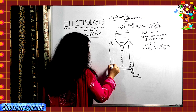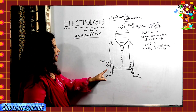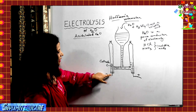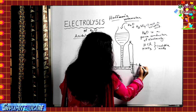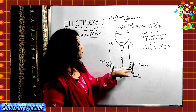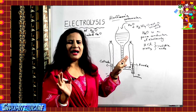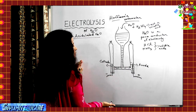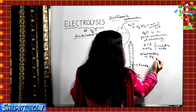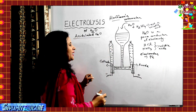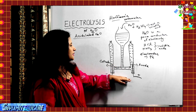This is the negative electrode - the cathode - connected to the negative terminal of the battery. The other electrode connected to the positive terminal of the battery is the anode. The electrodes are made of platinum because platinum is not very reactive and won't react with the electrolyte. The mixture of water and sulfuric acid acts as the electrolyte.